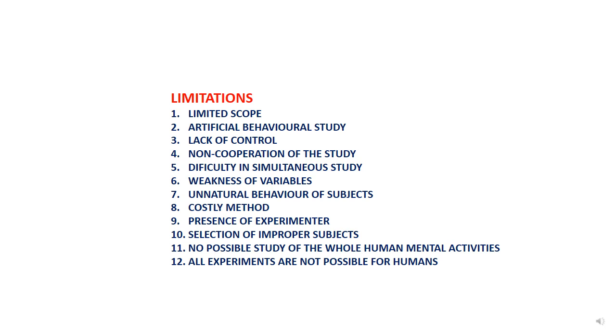Next is selection of improper subjects. Jeb hum improper subjects ka selection kertai hai experiment ke liye, toh bhi humay result nahi milte hai proper. No possible study of the whole human mental activities. Sare hamare jo human brain hai, woh bhot powerful hai. Har human ka jo brain hai, woh iksa nahi hota hai. Individual difference hota hai. So aap nahi bol sakte ki you are hundred percent accurate. All experiments are not possible for humans. Sare jo experiments hain, woh humans ke liye appropriate nahi hai. Kiunki human ki jo brain ki jo power hai, ya human behavior jo hai, woh fixed nahi hai. Invisual difference is always there.